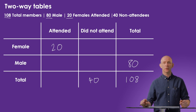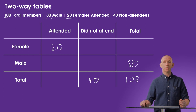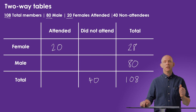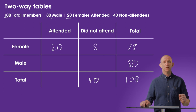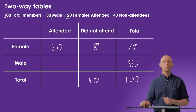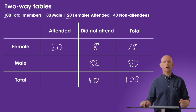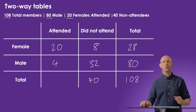Having added all that information, we can look at rows and columns with one empty space and calculate their values. We work out the total number of female supporters by subtracting the 80 males from 108 to get 28 females. Since 20 females attended, it means 8 did not. If 8 of those who did not attend are female, we subtract that from 40 to get 32 males who didn't attend the match.